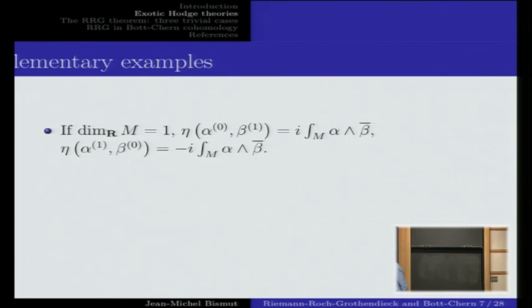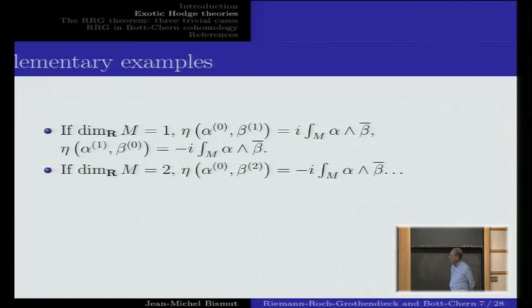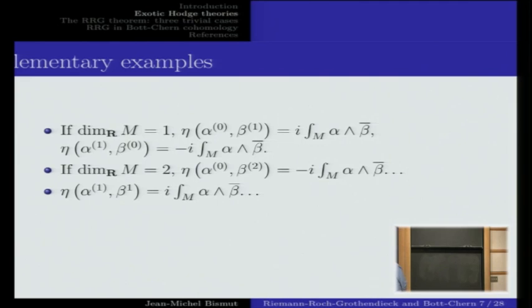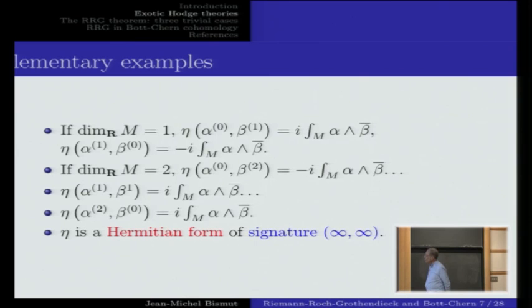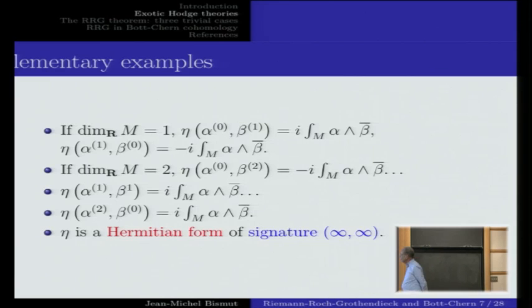Elementary examples: in dimension 1, the pairing between a form of degree 0 and degree 1 has a power of i in front. For a Riemann surface, the proper pairing between forms of degree 0 and degree 2 is −i ∫ α ∧ β̄; in degree 1 it is i α ∧ β̄; and in degree 2 it is i α ∧ β̄ again. This generalizes to any dimension. The key point is that this Hermitian form has signature (∞, ∞), contrary to the classical L² Hermitian product on which Hodge theory is usually based.